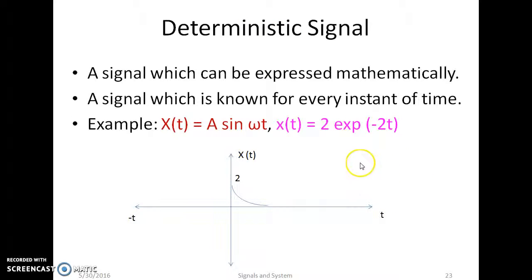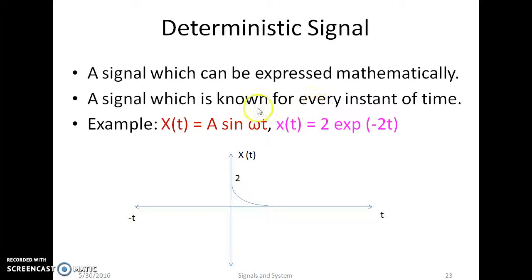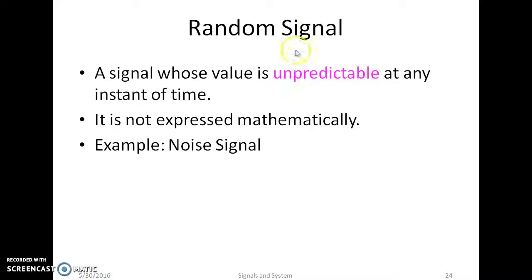The next category is deterministic and random signal. A deterministic signal is expressed in terms of a mathematical equation, known for every instant of time and is predictable. A random signal is one whose value is unpredictable at every instant of time and cannot be expressed mathematically. An example of a random signal is noise.